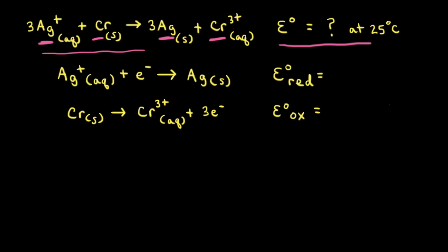The first step is to write down the half reactions that make up the overall redox reaction. Silver cations are reduced, therefore they need to gain an electron to turn into solid silver, and solid chromium turning into Cr³⁺ ions must lose 3 electrons.